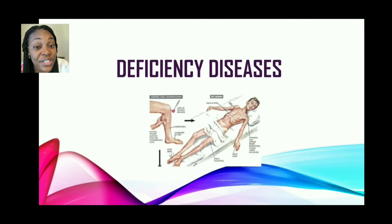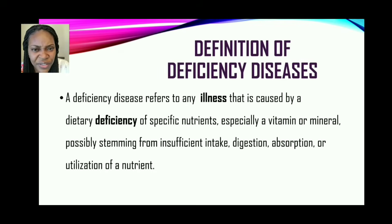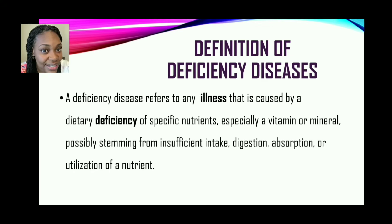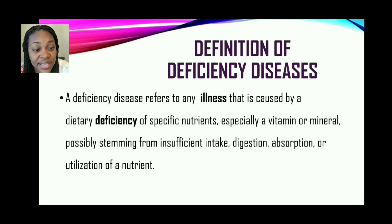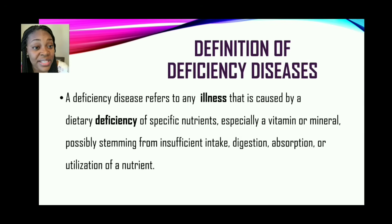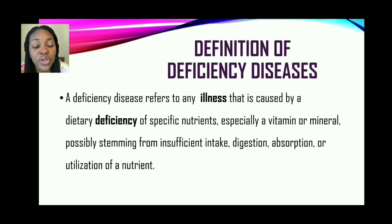Now let us move on to deficiency diseases. A deficiency disease refers to any illness that is caused by a dietary deficiency of specific nutrients, especially a vitamin or mineral, possibly stemming from insufficient intake, meaning the diet doesn't have enough of that particular nutrient. The diet may have the nutrient, but there may be a digestion or absorption problem, or the body is unable to utilize the nutrients being supplied. It's very important to understand which nutrients work together so that proper absorption of a particular nutrient can take place.